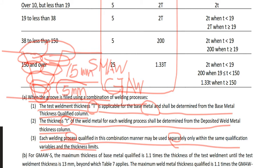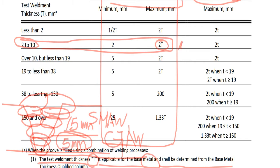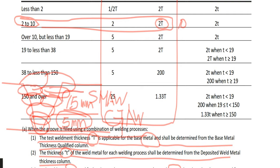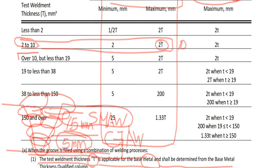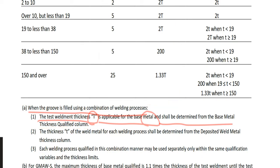Then this 5mm GTAW deposit should be applied separately. The qualification for base metal thickness is 2 to 2T, which is 10mm. For the SMAW process the thickness is 15mm, so that line is 10 to 19 — meaning base metal qualification minimum is 5 to 2T, which is 13mm. Qualification must be applied separately for each process.